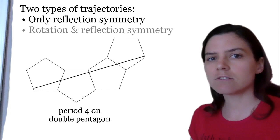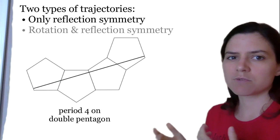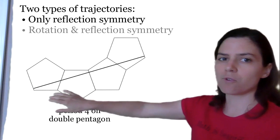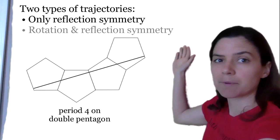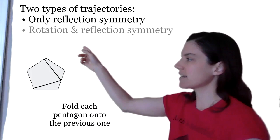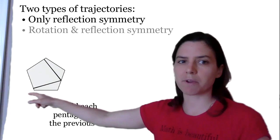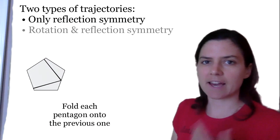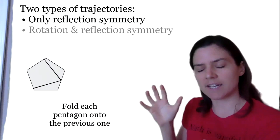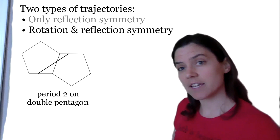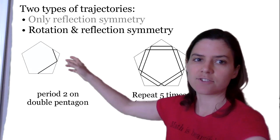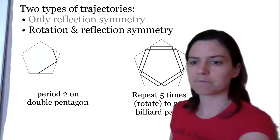Now I want to tell you about symmetry. On the Pentagon there are two types of trajectories: ones with only reflection symmetry, and ones with both reflection and rotation symmetry. This is a trajectory of period four on the double Pentagon — when I fold it up, fold, fold, fold — it's actually a complete billiard trajectory. It looks like only two pieces, but it's actually a trajectory of period four; it just bounces like this. This is how you get reflection symmetry: by having a trajectory on the double Pentagon that, when you fold it up, is a complete trajectory. On the other hand, you can have a trajectory that when you fold it up is not done, so you have to have five copies of it to get a billiard path. That's how you get something with rotational symmetry.